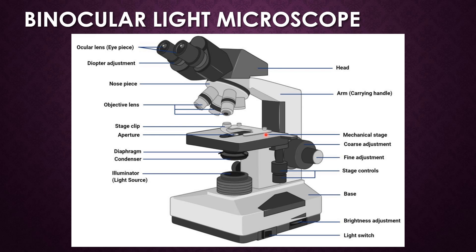Next is the stage, or mechanical stage. This is the platform that holds the specimen to be focused. The stage also contains stage clips, which are used to hold the slides placed on the stage. Next is the stage control, which is used for adjusting the stage clips towards the left and right or front and back positions.